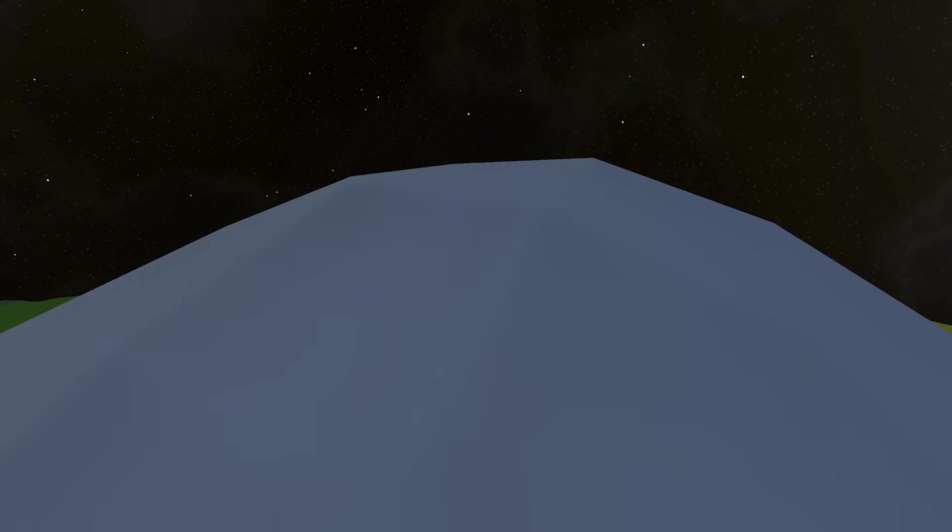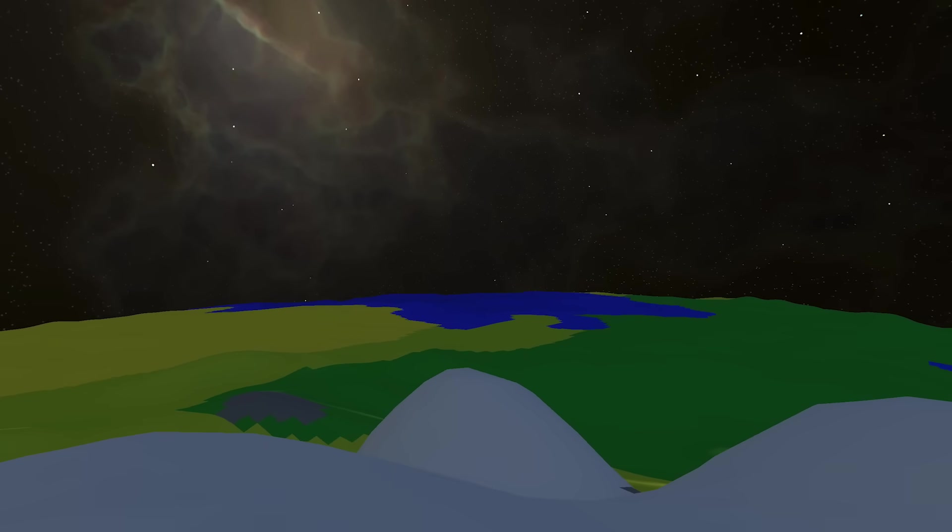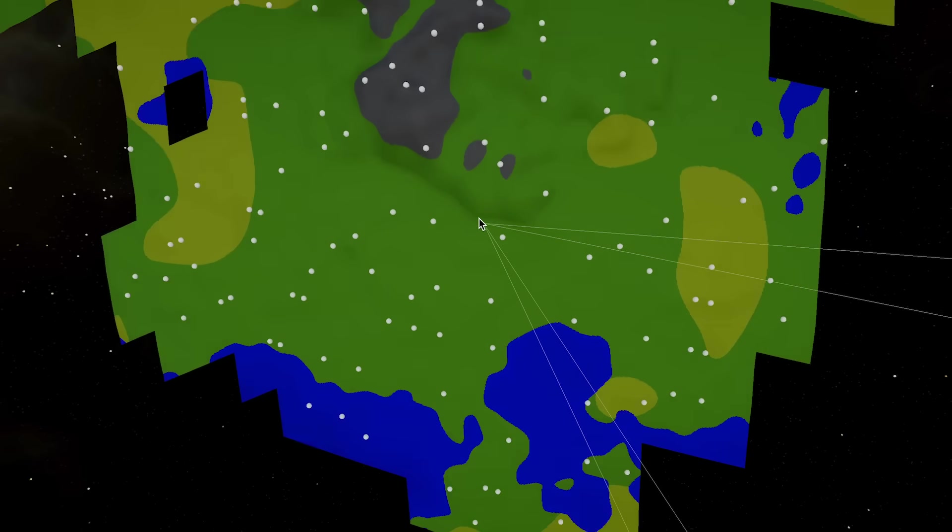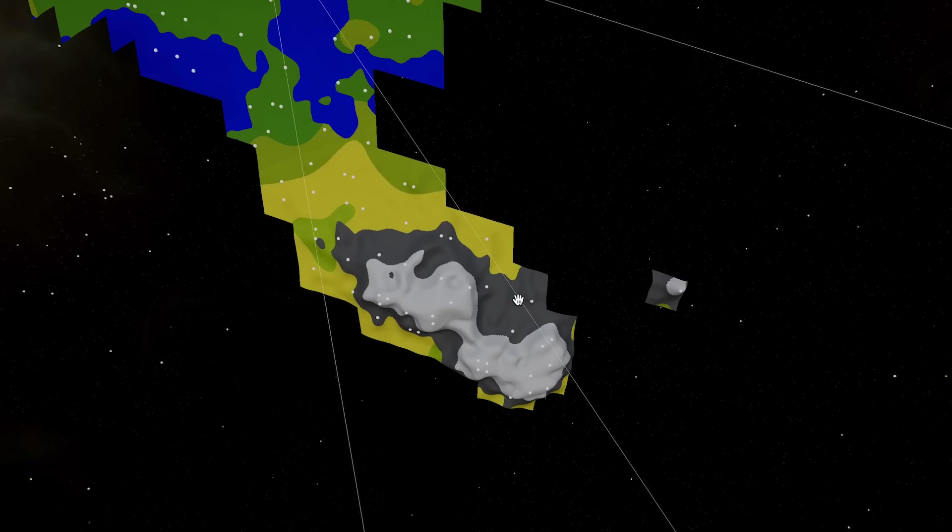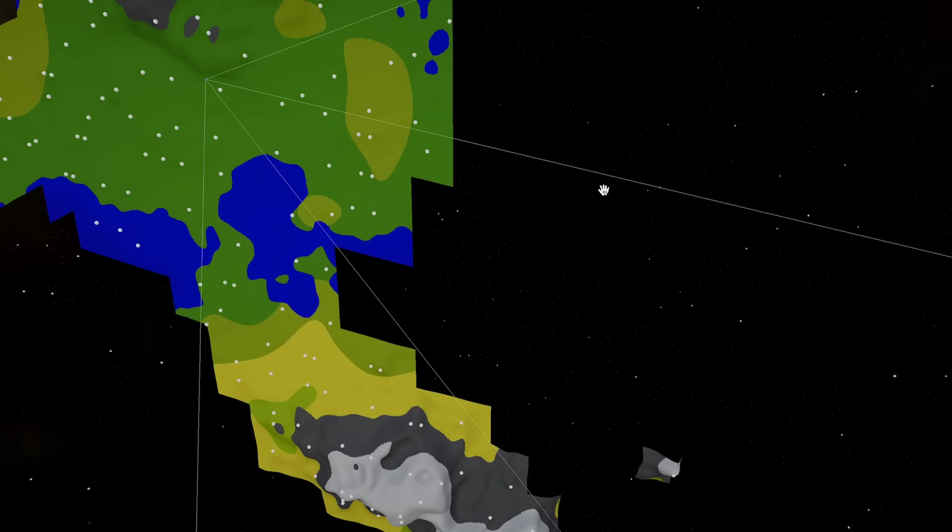And now our player can freely walk around the planet, and we even see mountain peaks far off in the distance. The oceans aren't exactly realistic, but this is something I'll work on in the next video of this six part series. For now here's how the chunk rendering looks behind the scenes. Chunks with very high peaks are rendered even at a large distance, while some closer chunks are disabled, improving performance.